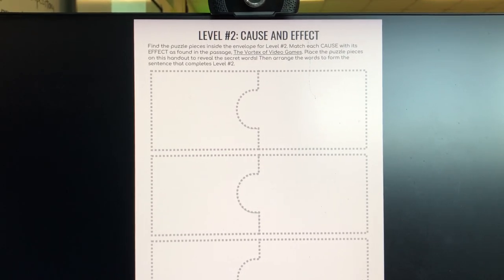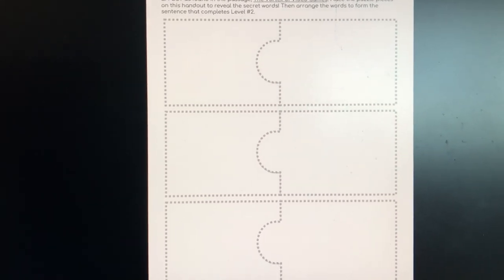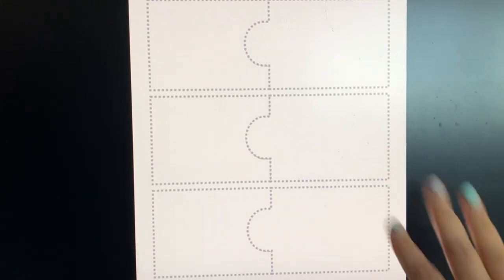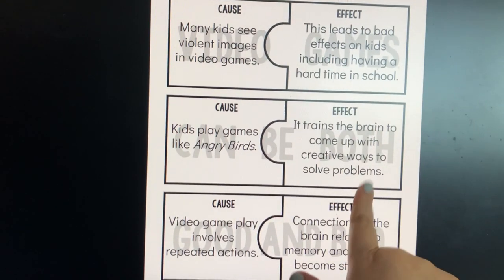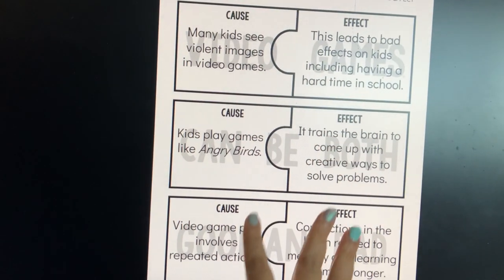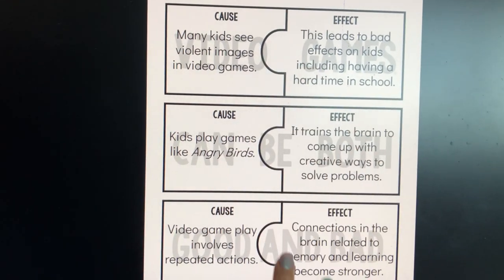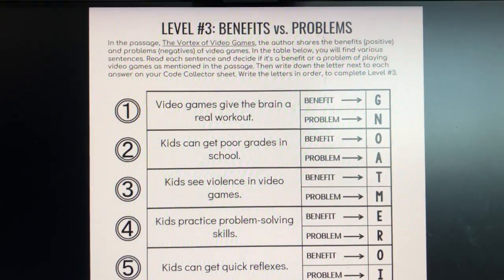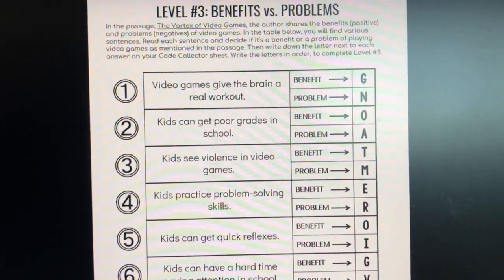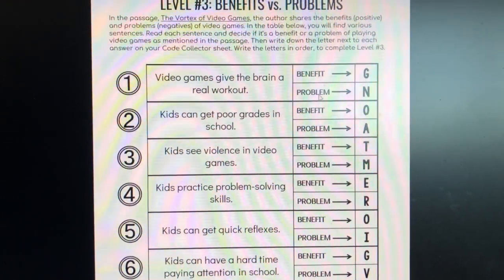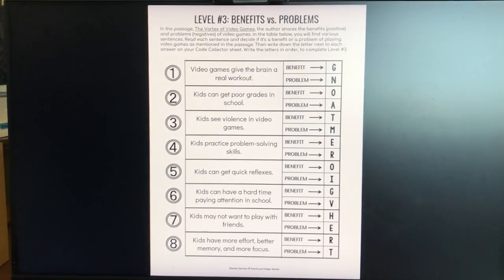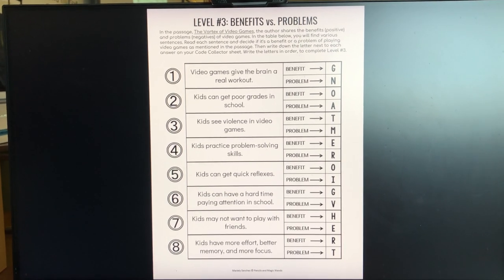The activity is called a "level" because students are reading about video games. In level two, they have a cause and effect matching activity. They don't have to put them in any order, but they must match cause with effect. Once connected, the words behind the strips read "video games can be both good and bad," and students rearrange them to make the complete sentence. Level three is a dichotomous key — students decide whether each statement is a benefit or a problem of video games, circle the word, and fill in their code collection sheet to see the final clue.